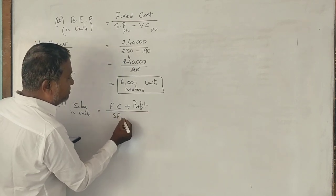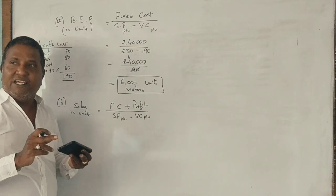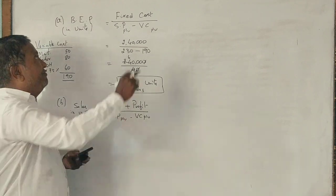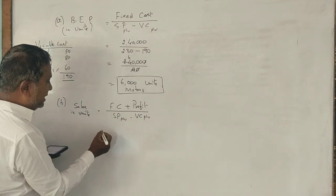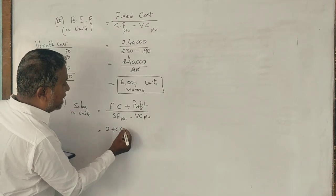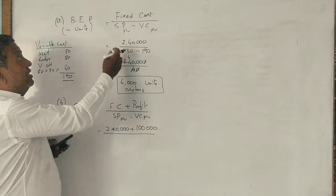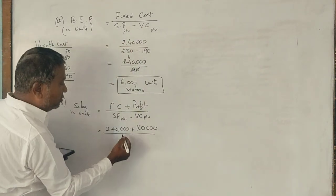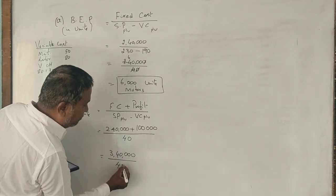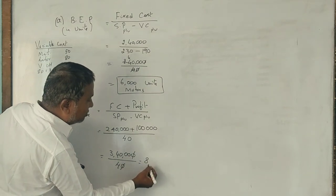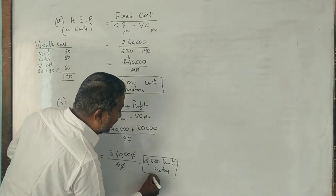Fixed cost plus profit divided by selling price minus variable cost per unit. Same formula. Fixed cost 2,40,000, profit is 1,00,000. Selling price 230 minus variable cost per unit 190, that's 40 rupees. 3,40,000 divided by 40.